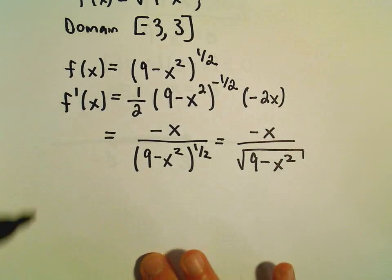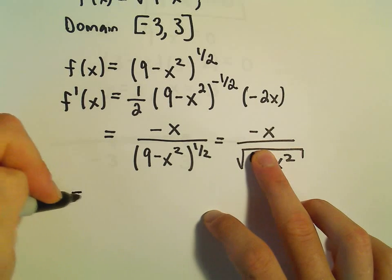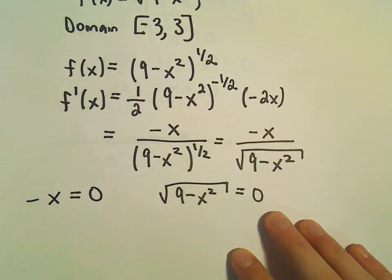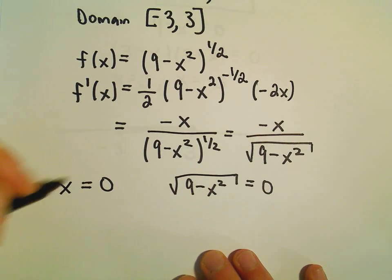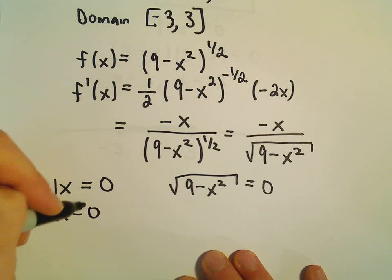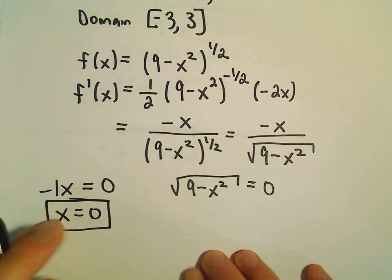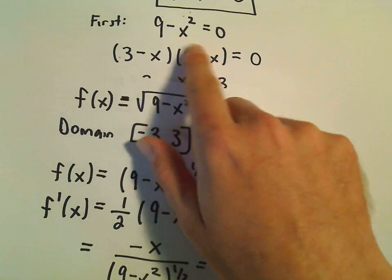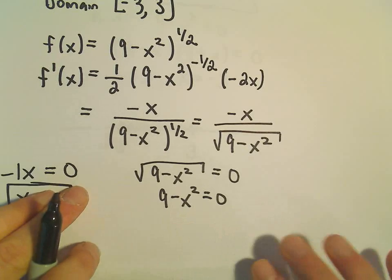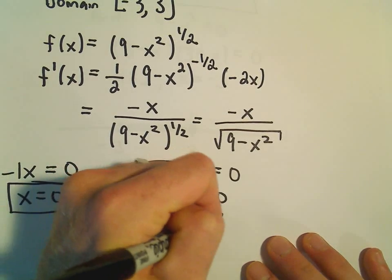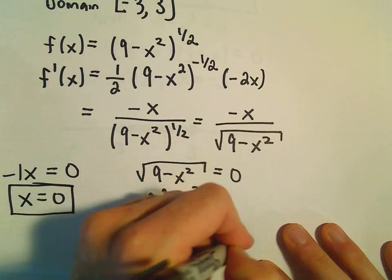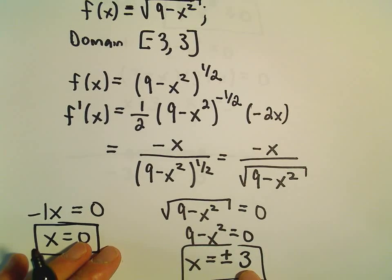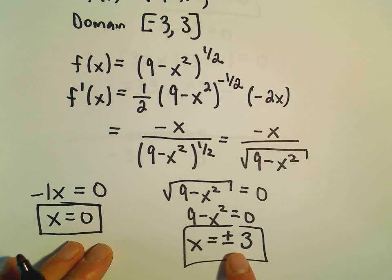To find critical points, we set the numerator equal to 0 and the denominator equal to 0 — finding where the derivative equals 0 and where it's undefined. The numerator gives x equals 0. The denominator equation 9 minus x squared equals 0 gives x equals positive and negative 3. At positive and negative 3, the derivative is undefined. These are the endpoints of the domain — the places where we get vertical tangents.